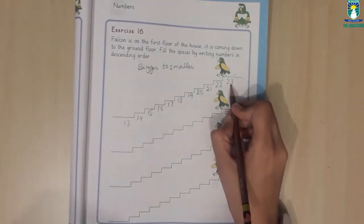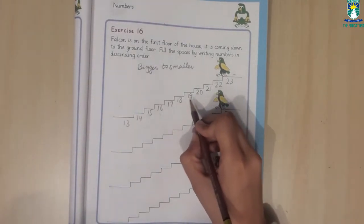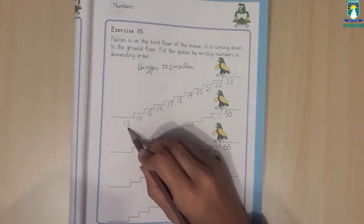We will start with bigger numbers. Backward counting. We will write the number in smaller numbers.